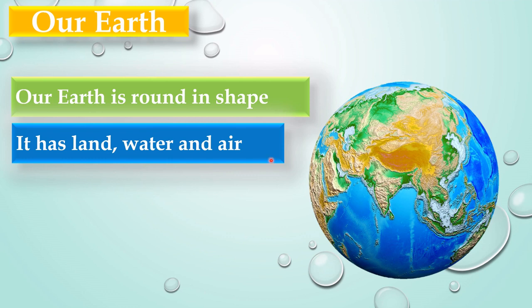In this image, we can see the blue color area represents water. Whereas the green and the brown area represents land. And the air is surrounded everywhere.